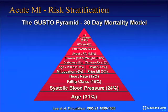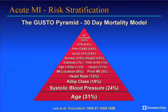With only a very few variables, you can get a fairly good idea of the patient's risk — the so-called GUSTO pyramid. Five major factors constitute about 90% of the information regarding overall risk for short- and long-term complications: advanced age, fallen systolic blood pressure, Killip class greater than one, tachycardia greater than 100, or anterior myocardial infarction. These simple factors sum up to about 85–90% of total predictive value for risk.